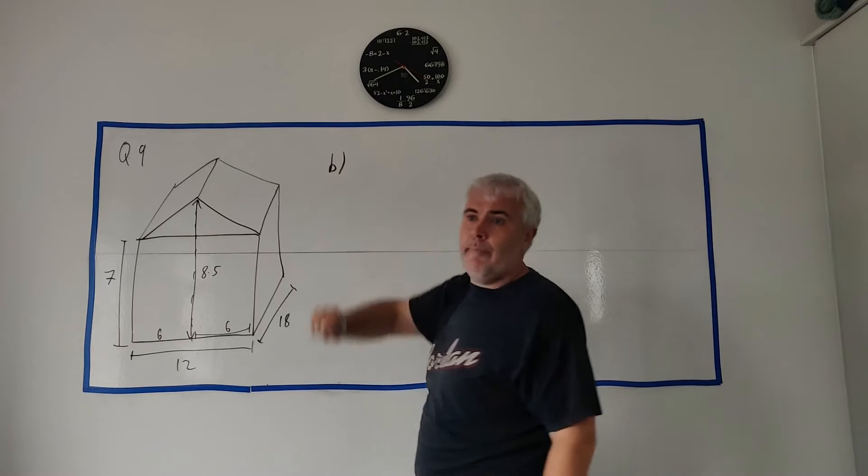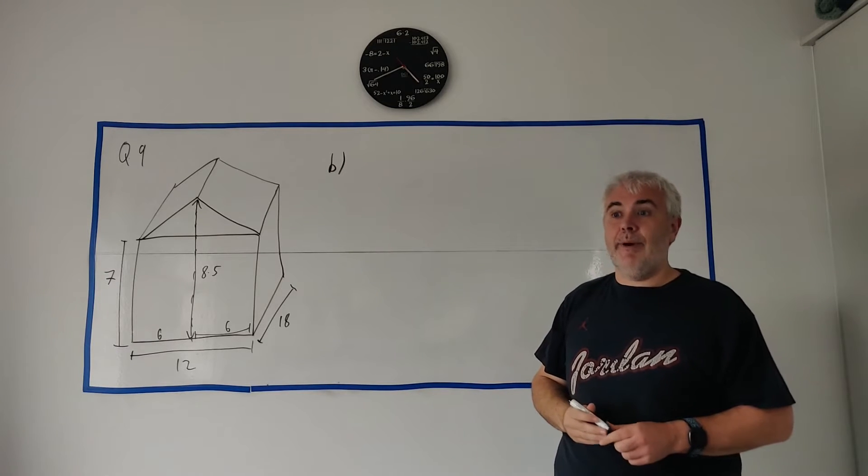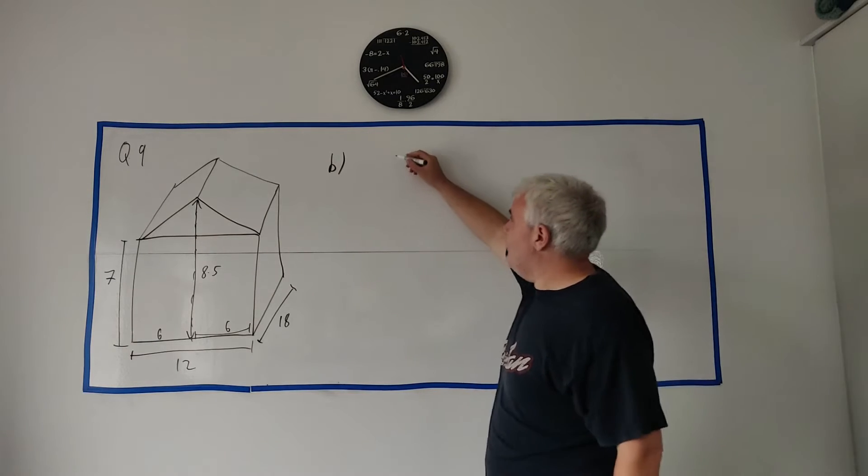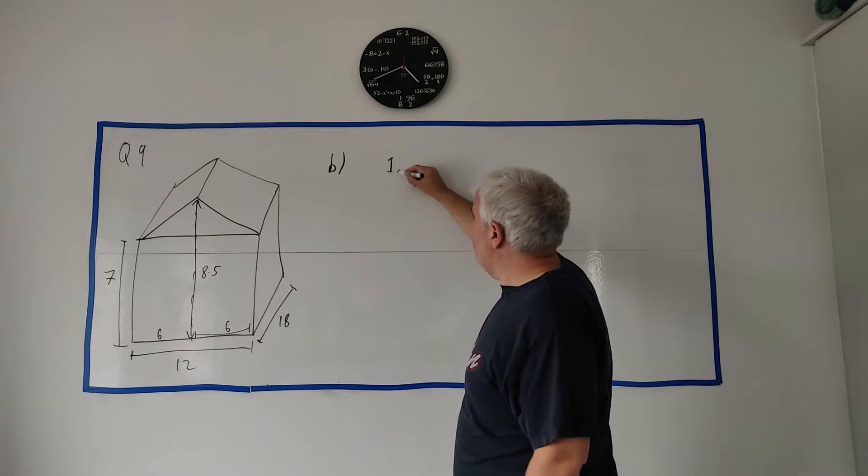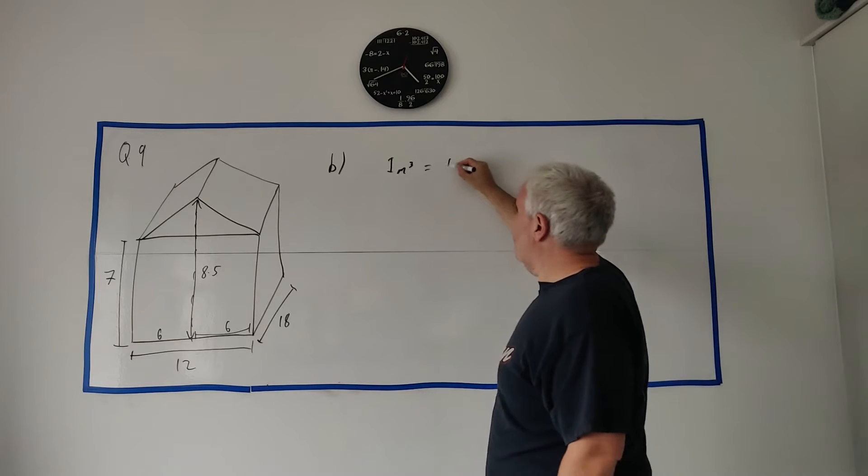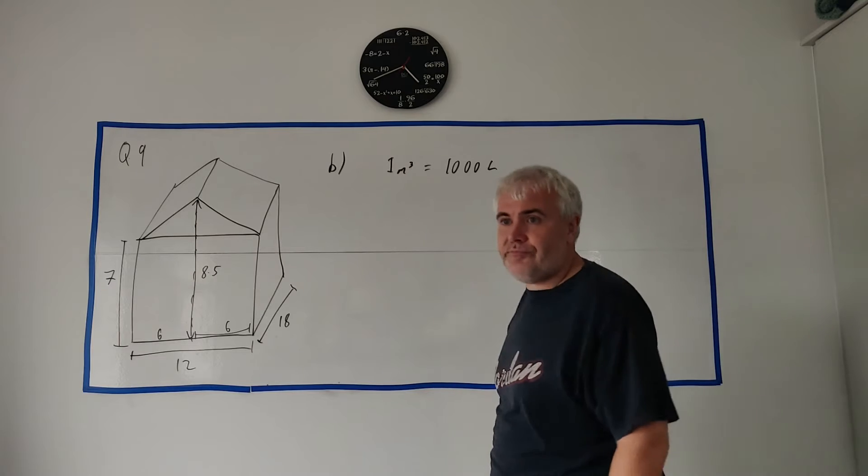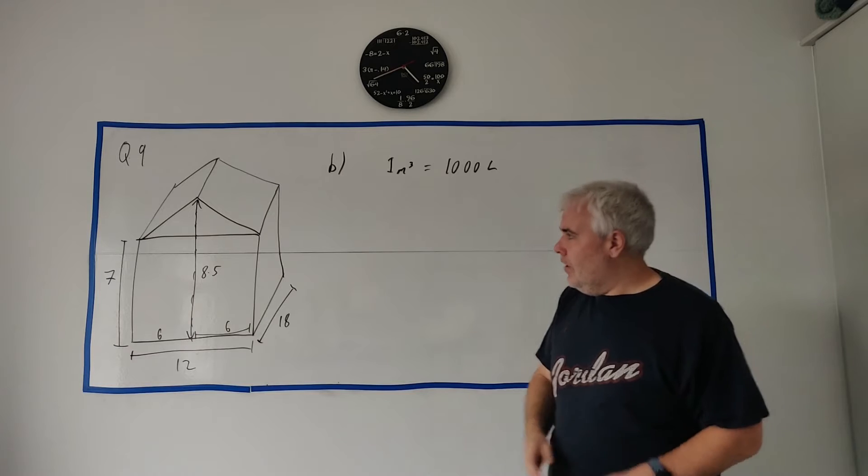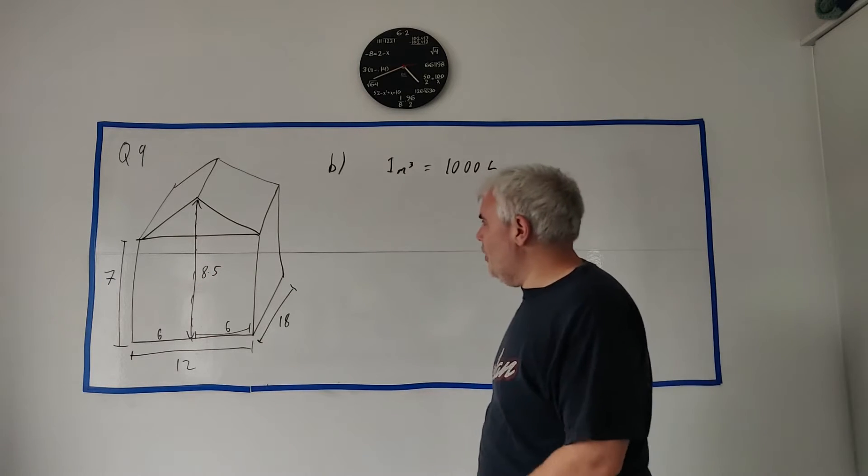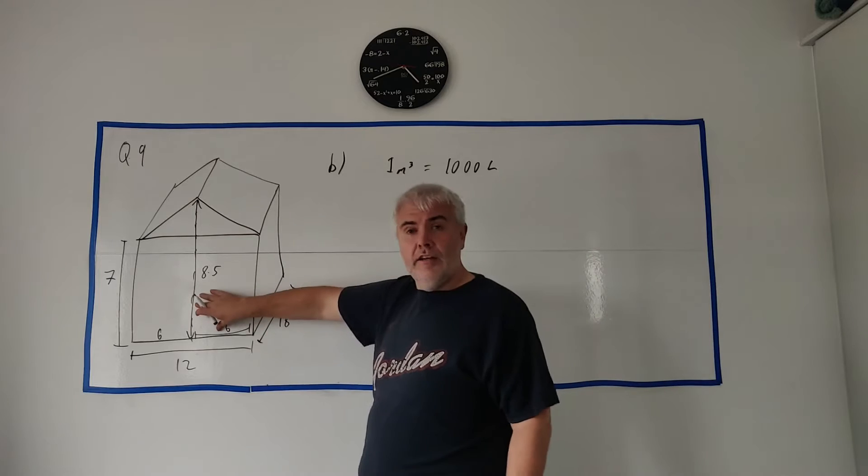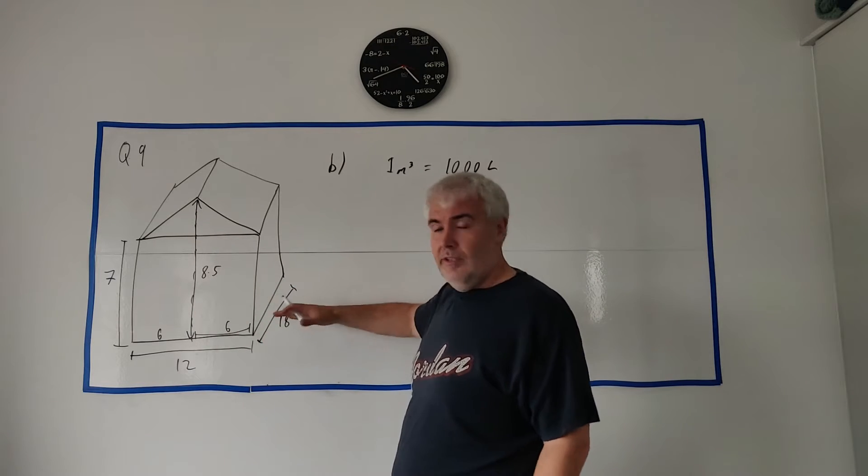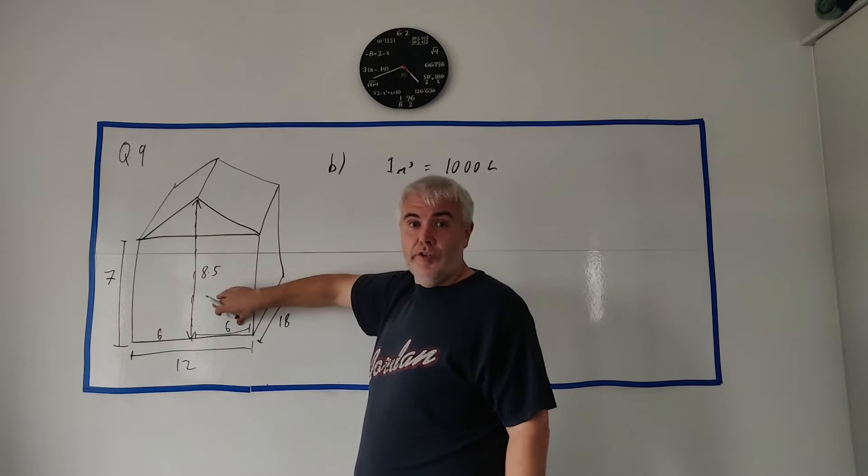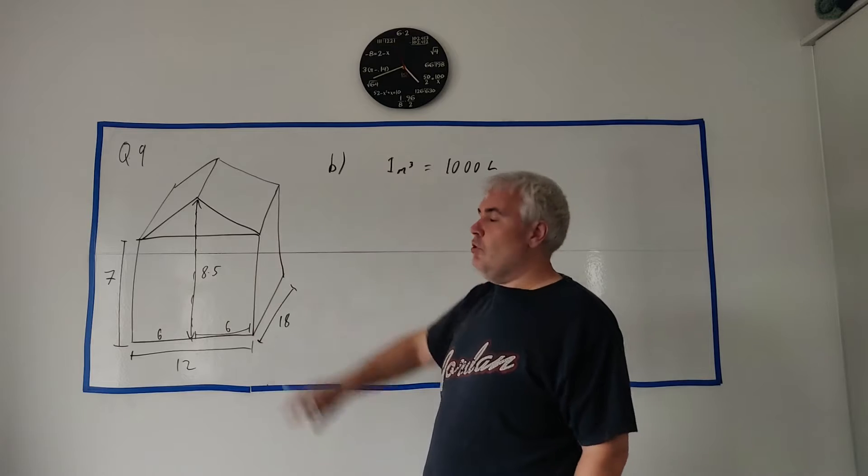Now, part B. It says that Sean says that the capacity of his shed is over a million litres, and they tell us one metre cubed is equal to a thousand litres. Work out the volume of his shed to show that he's correct. So, let's just find the volume of this, and to find the volume of anything, all we have to do is find the area and multiply it by the depth, if it's a regular prism like this is.